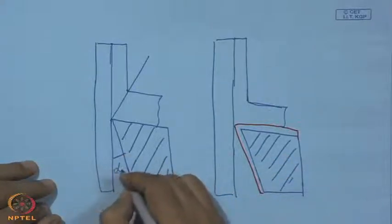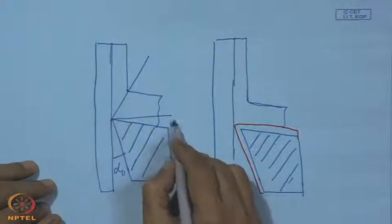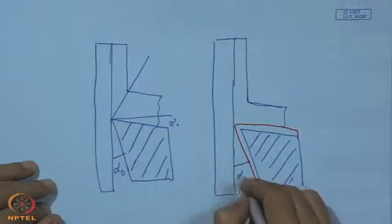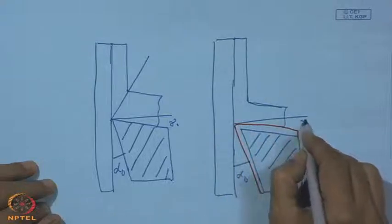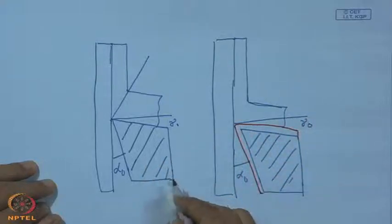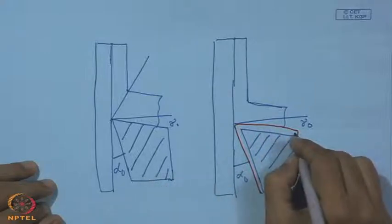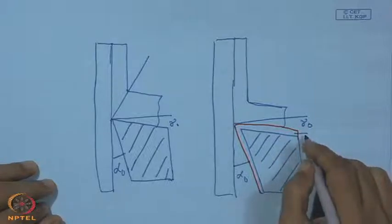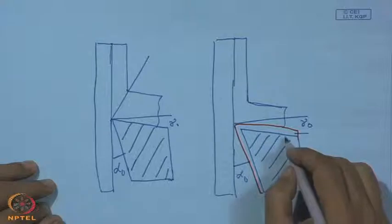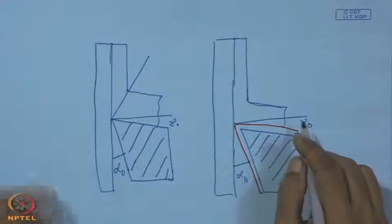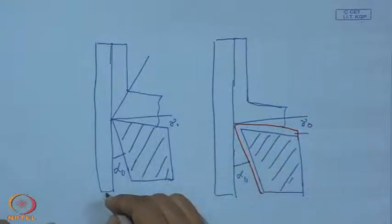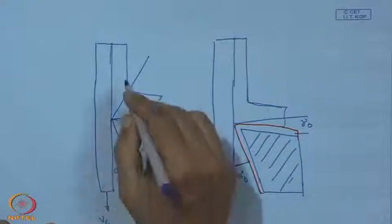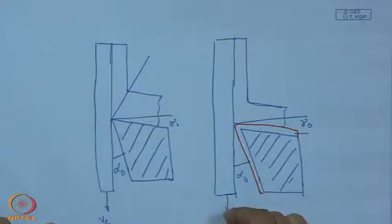Here we have clearance angle and rake angle — the same tool, say a carbide tool. On that we have put a coating of TiN. If it is CVD then it should be TiC plus TiN; if it is PVD then we can have a buffer layer of Ti followed by TiN. That would be the only difference. The job can move in one direction or the tool in the other — the situation and effect will be the same.